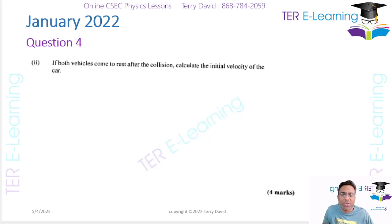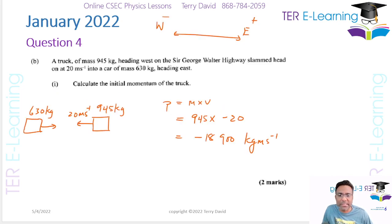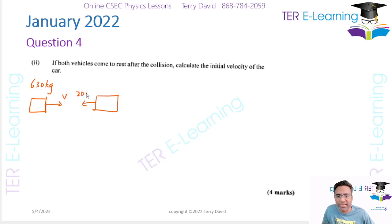So if both vehicles come to rest after the collision, calculate the initial velocity of the car. Remember, the car was traveling this way, and we don't know what that velocity was, but we knew the mass was 630 kg. The truck was traveling at 20 meters per second, and its mass was 945 kilograms.